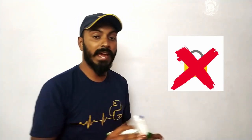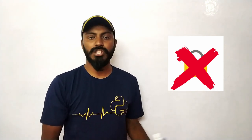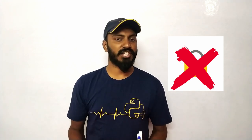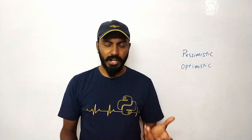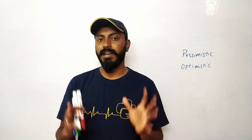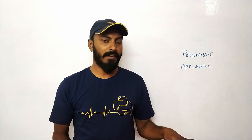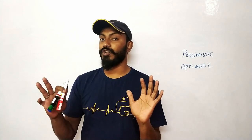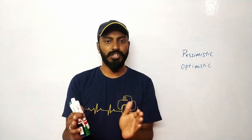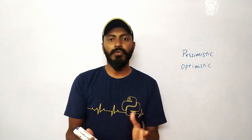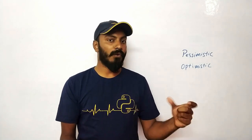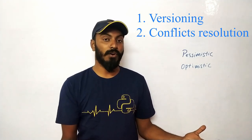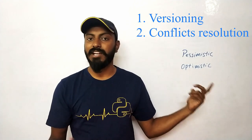Using locks is called pessimistic concurrency control, and that's ruled out at the very first step. What we need is a lock-free architecture. The next option is optimistic concurrency control — we optimistically think that nothing is going to go wrong even when all users are editing the same document, and we solve it by tracking versions or states of the document.